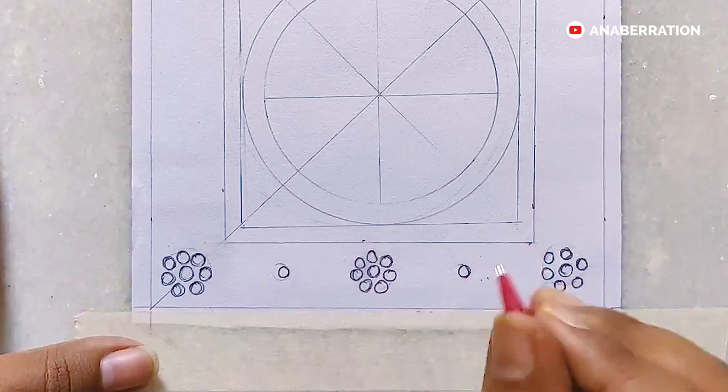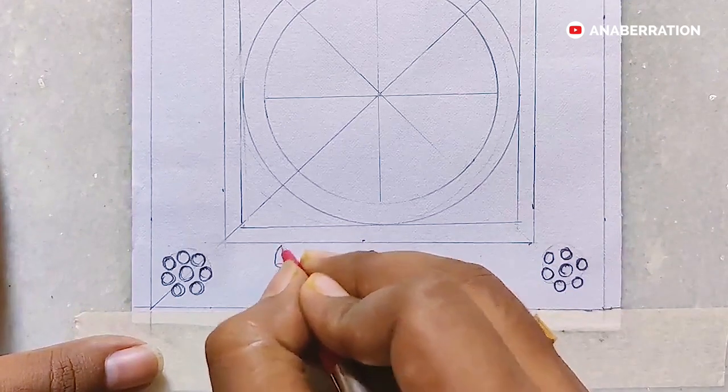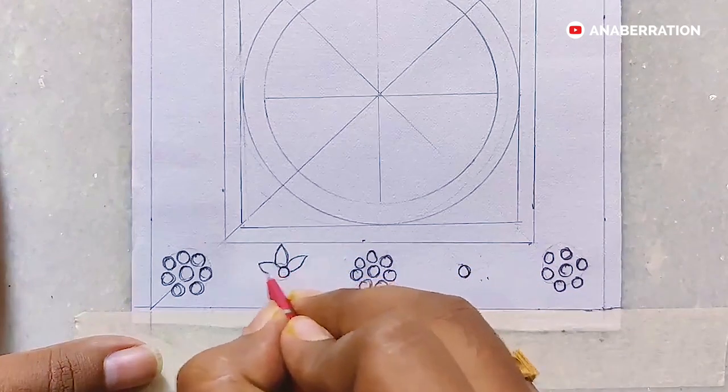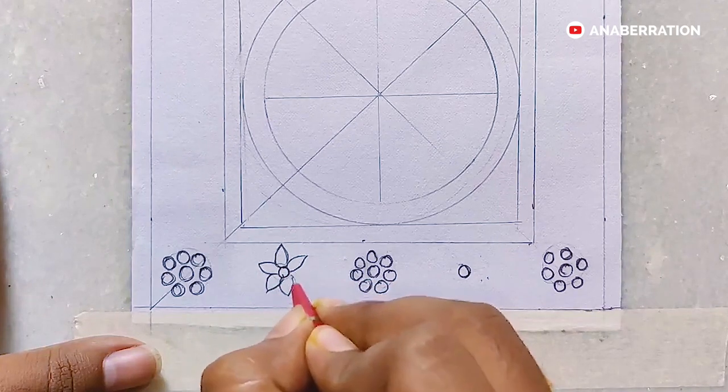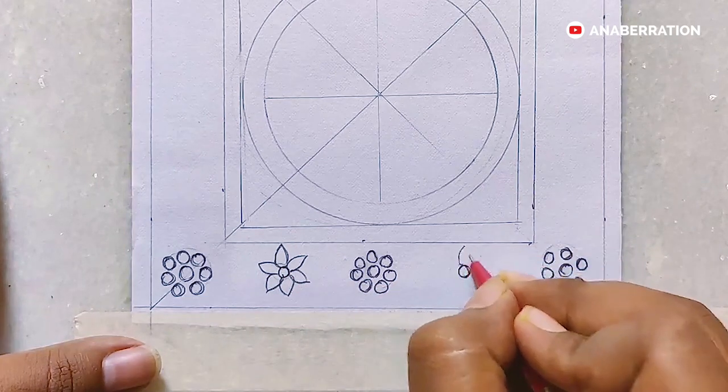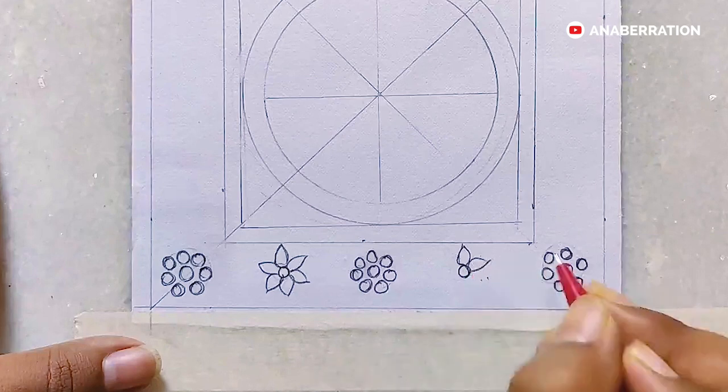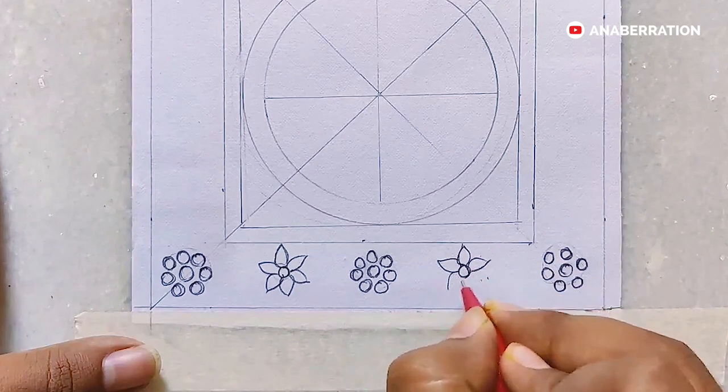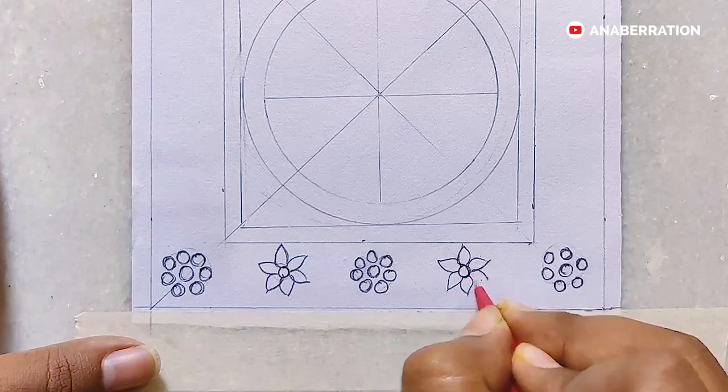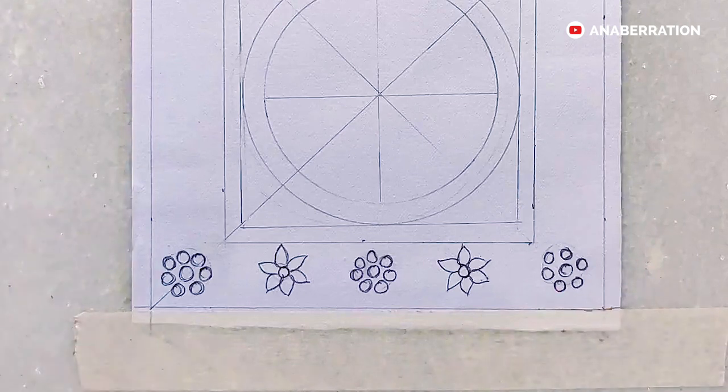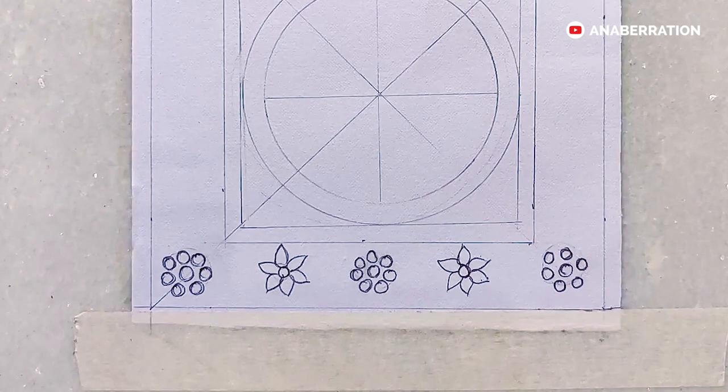After the corner flowers are done, now we will move toward the central flowers where we will give the flower a pointy petal shape. This flower will be done using our cone work and there will be a mina in the center of the flower. After the flower is done, now we will move forward for the petals and the leaves section.